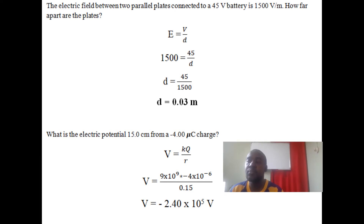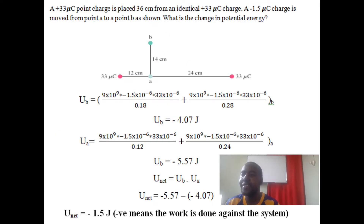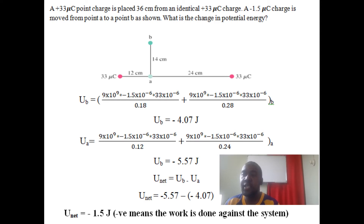Next question: we have two similar charges of the same sign, and a smaller charge of negative 1.5 microcoulombs moving from point A to point B. We're asked for the change in potential energy. We find the potential energy at each point, then subtract to find the difference.